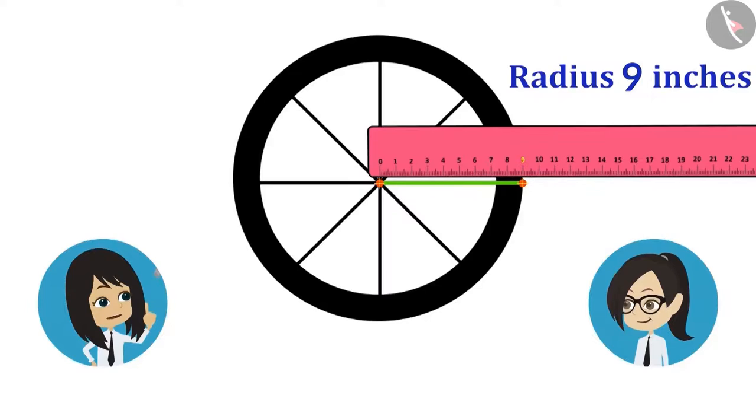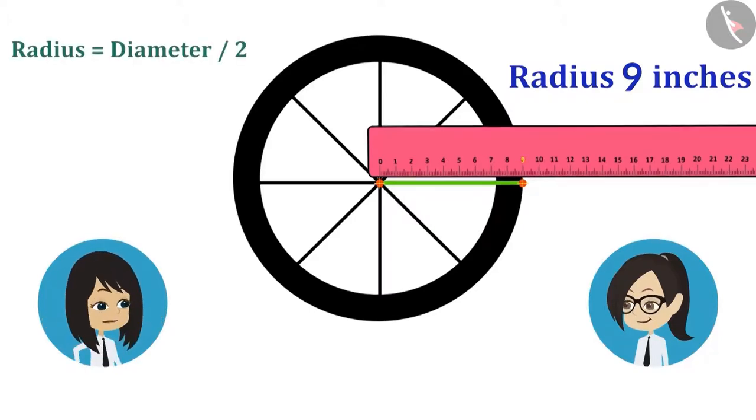Hey. Why do we need to measure it? We can find it only by measuring the radius. How? Look. The radius is also called the half of diameter. This means that the diameter will be twice the radius.